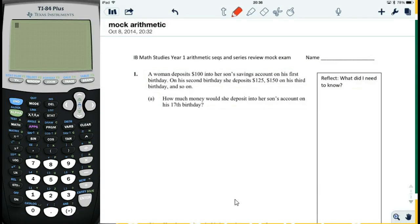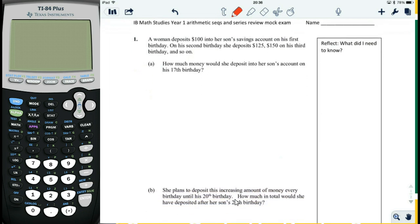Here are the solutions for the mock exam for arithmetic sequences and series. A woman deposits $100 into her son's savings account on his first birthday, $125 on the second birthday, and $150 on his third birthday.